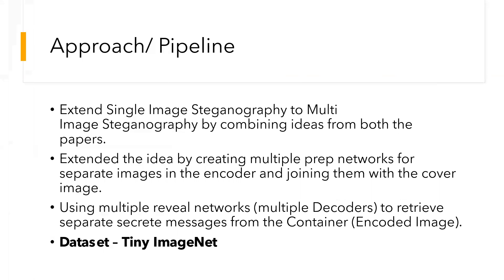Now we start with our approach and the pipeline. The first aim for us was to successfully implement single image steganography, similar to Baluja's paper. We then extended this to multi-image steganography by using a concatenated set of secret images and a cover image to get an encoded image, which looks similar to the original cover image. We then pass this through multiple decoders to get each set of secret images. We are using TinyImageNet as our dataset.